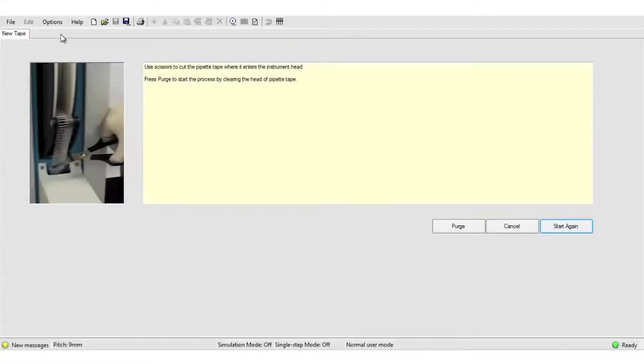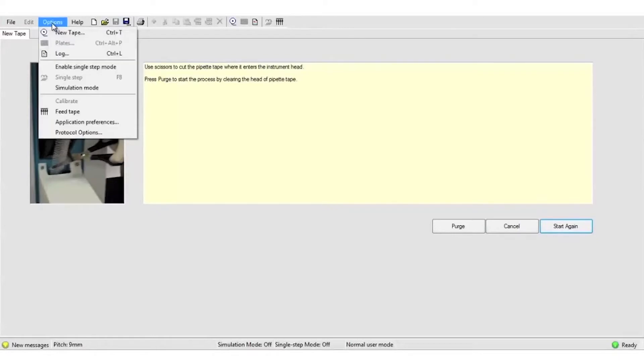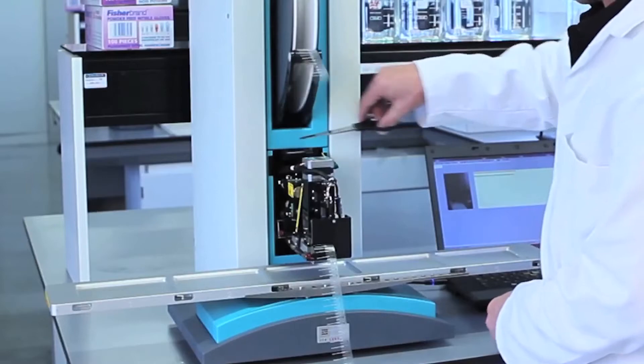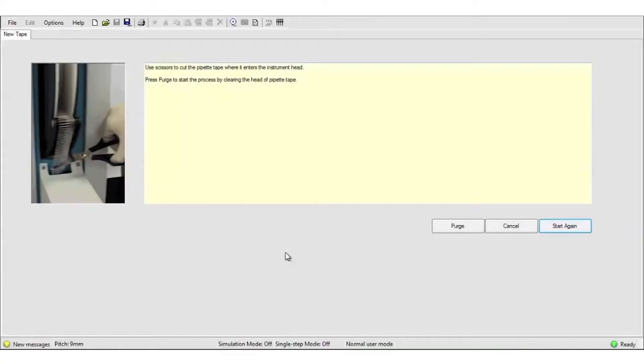Next we're going to go to the software and there's a step-by-step wizard to help you change the spool. The next step is to use the scissors to cut tape and then to press purge.